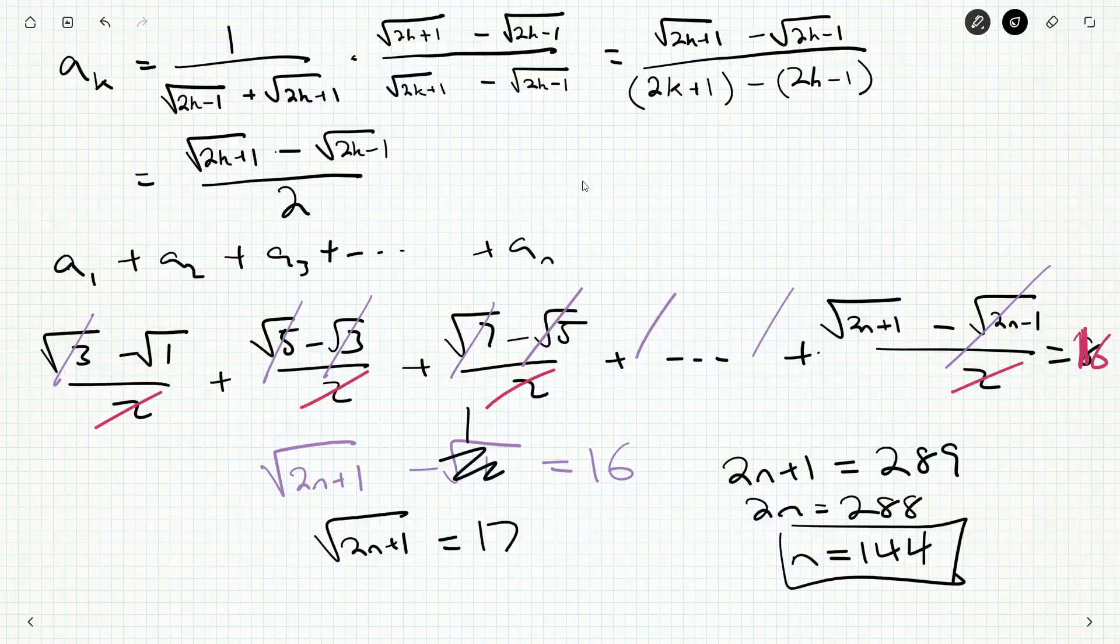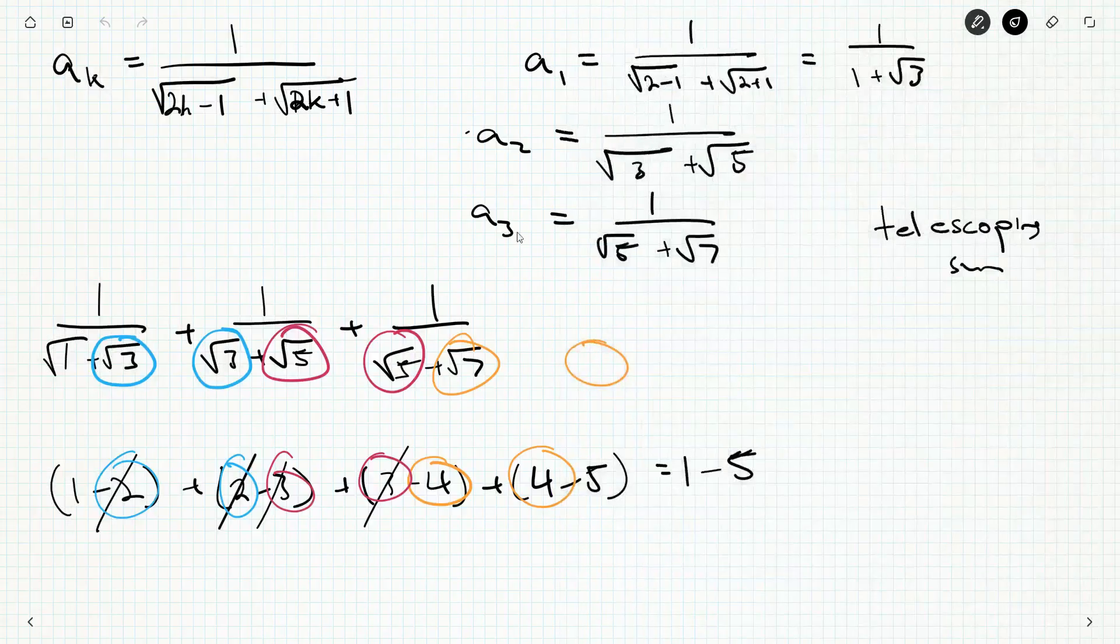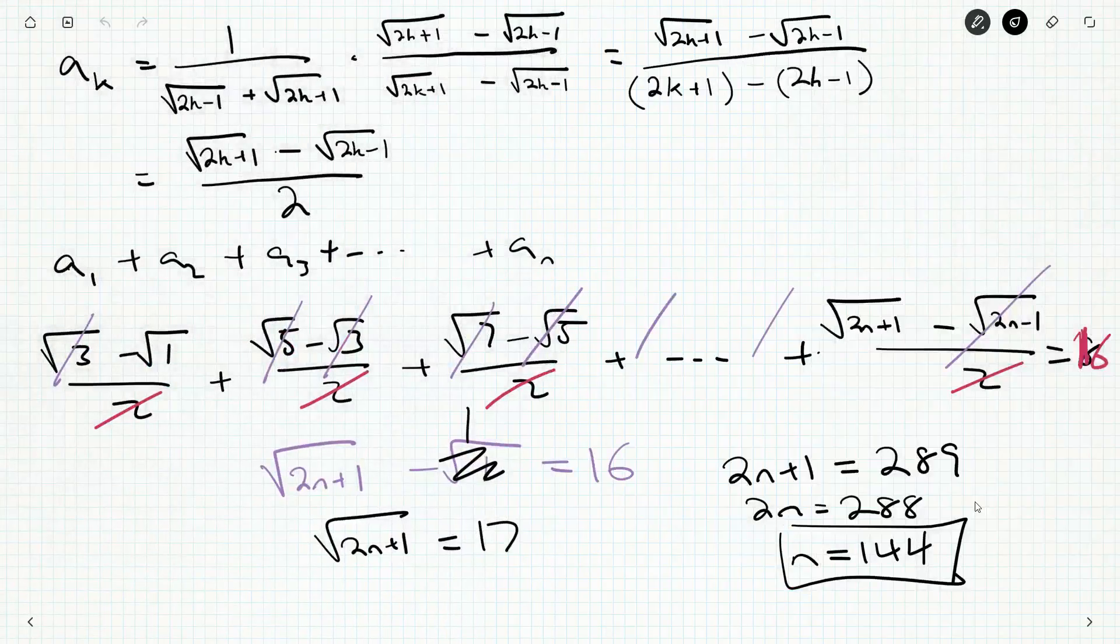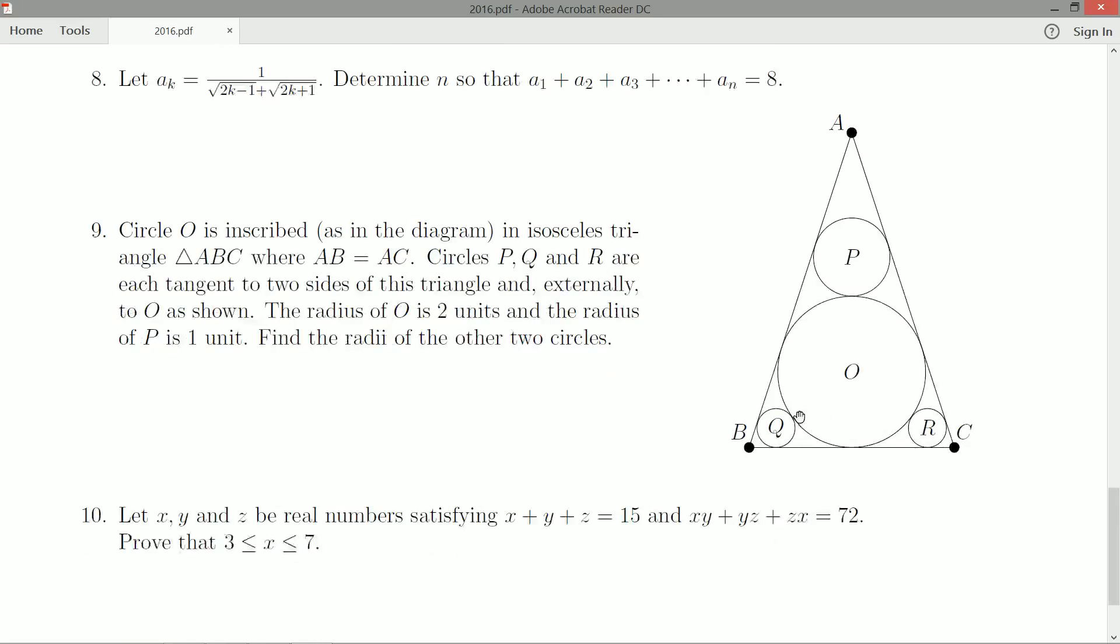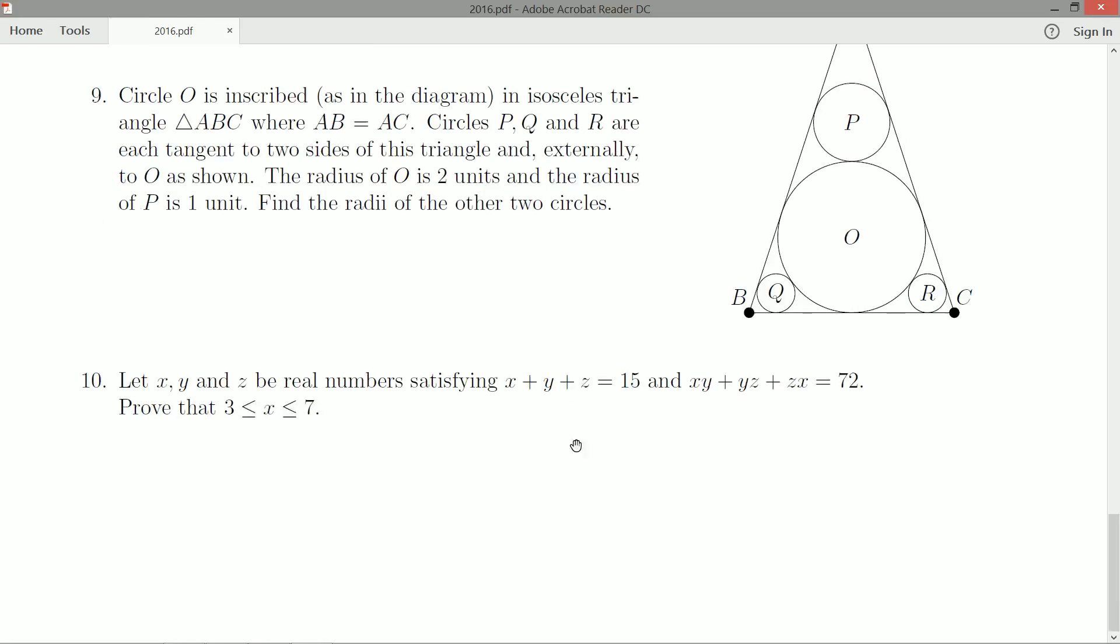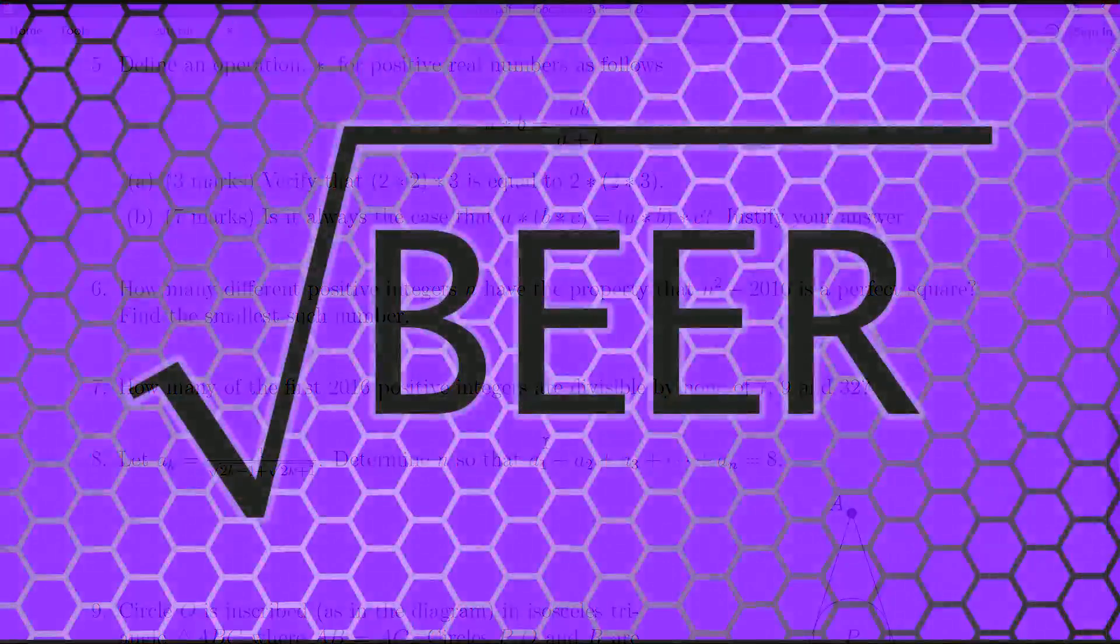If you want to sprinkle in some explanations, you know, rationalize the denominator, that sort of thing, that would be fine. You want to mention telescoping sums or telescoping series, that's great too. But all the essentials are there. And that does it for question 8. So we're making great headway. We'll take a look for question 9 in the next video. And then it will be off to question 10, our very last question. So thanks for joining me and look forward to a future video where we do more of the 2016 Manitoba contest.